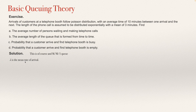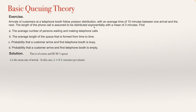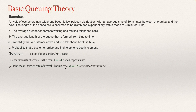We are going to use these symbols. First, lambda is the mean rate of arrival. The average time is 10 minutes between one arrival and the other, so lambda equals 0.1 customers per minute. We are going to symbolize as mu the mean service rate. The mean time the customer spends on the phone call is 3 minutes, so mu equals 1/3 customers per minute.